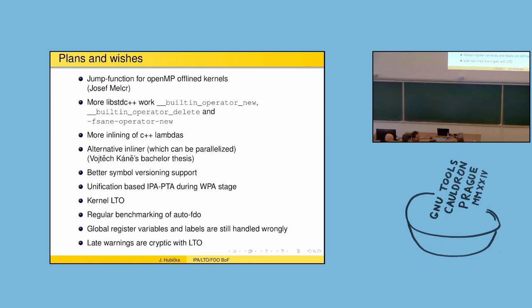We could delay emitting diagnostics because often the code is later eliminated, or warn earlier with fewer optimizations. Jump threading is also problematic for profile updating — if we estimate before threading and then thread, the profile goes wrong. That was the main motivation for catching easy jump threading early.